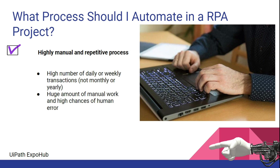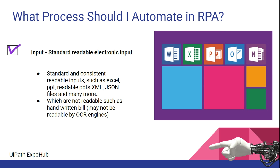There should be a huge amount of manual work with high chances of human error. For example, generating reports every day and sending them to people, data entry work where employees update dashboards daily, or processing access requests every day where the process remains the same. You have to decide whether it is a highly manual and repetitive process — that's point number one.